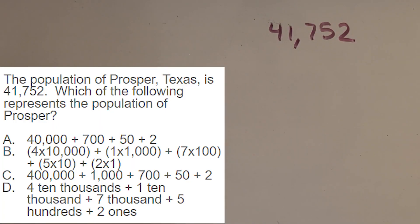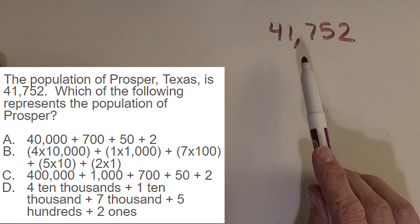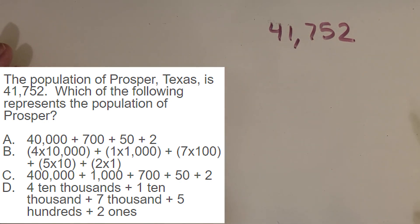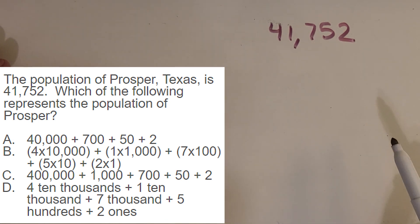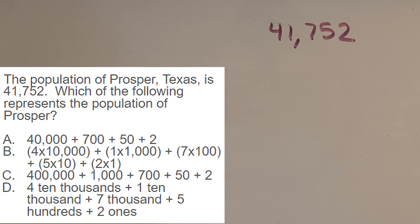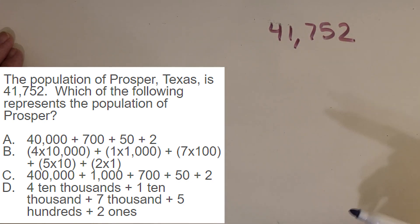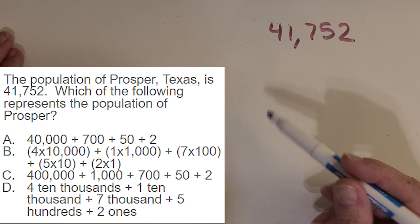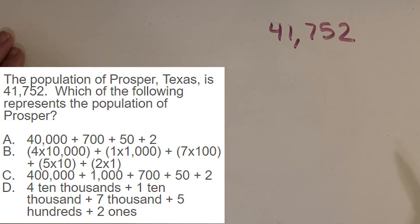Before we start solving on the whiteboard, I wanted to point out that for every word problem I do, especially if it's on a computer screen, I like to have a whiteboard or piece of paper next to my computer so I can jot down some things and try some strategies. That way I'm not just picking a choice that looks good — I'm feeling really confident about the choice I go with. So we have our population of Prosper right here, and I'm noticing that two of my answer choices, A and C, are both in expanded form. So a good first step is to write this in expanded form and see what we think about choices A and C.